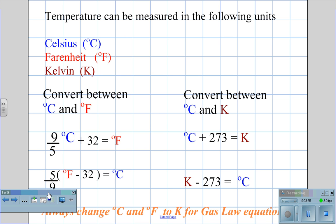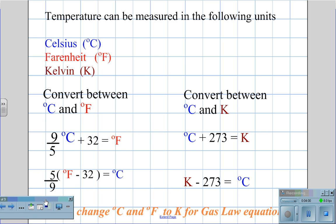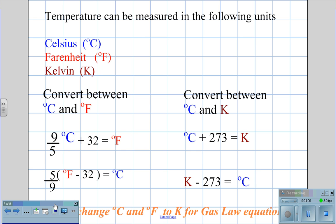For temperature, we can have it measured in Celsius, Fahrenheit, or Kelvin. To convert between Celsius and Fahrenheit, we use the equation (9/5)°C + 32 = °F, or 5/9 × (°F − 32) = °C. To convert between Celsius and Kelvin, we add 273 to convert Celsius to Kelvin, and subtract 273 to convert Kelvin to Celsius.